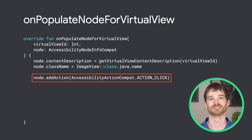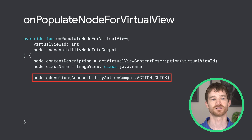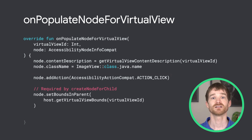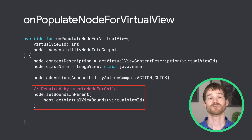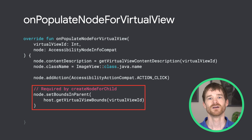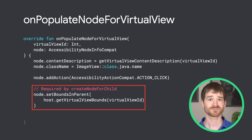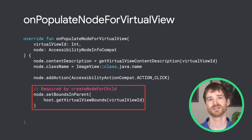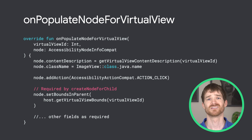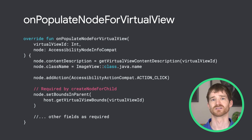That lets the accessibility services tell the user what actions can be performed, with an announcement such as "click to activate." Finally, you must set the bounds for the node. If you're using version 1.1 or below of the AndroidX custom view library, you'll have to set this with the deprecated setBoundsInParent method. In the upcoming 1.2 release, you can use the new setBoundsInScreenFromBoundsInParent method instead. Depending on your use case, there are a lot of other options, so be sure to read the class documentation for more info.